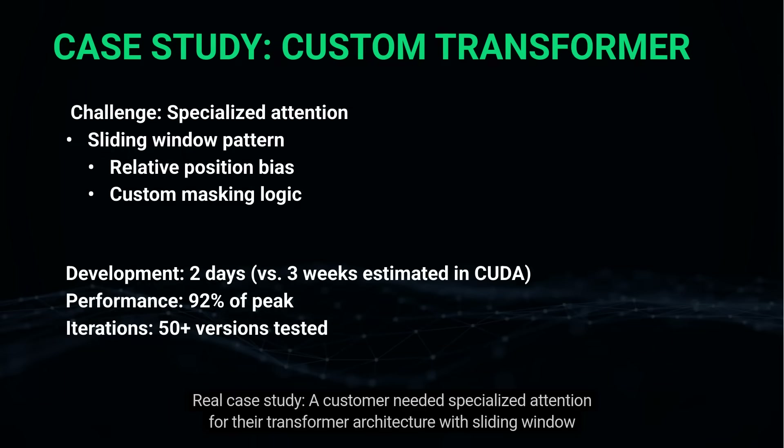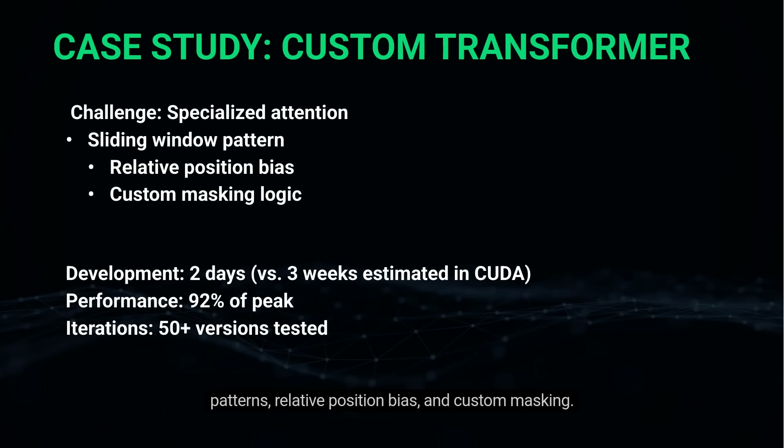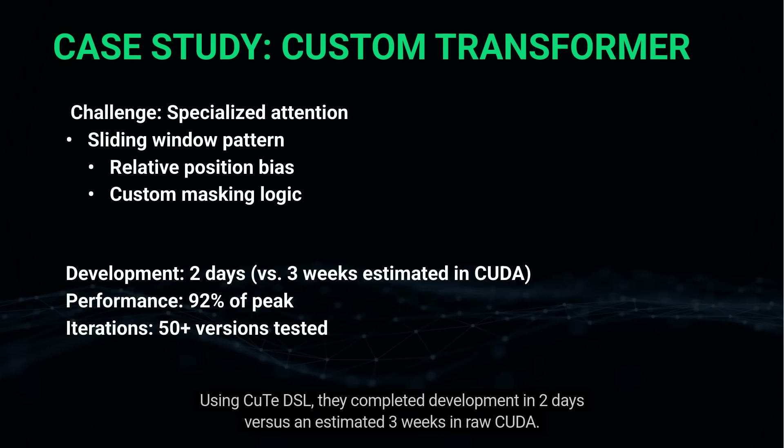Real case study: a customer needed specialized attention for their transformer architecture with sliding window patterns, relative position bias, and custom masking. Using CuTe DSL, they completed development in two days versus an estimated three weeks in raw CUDA.